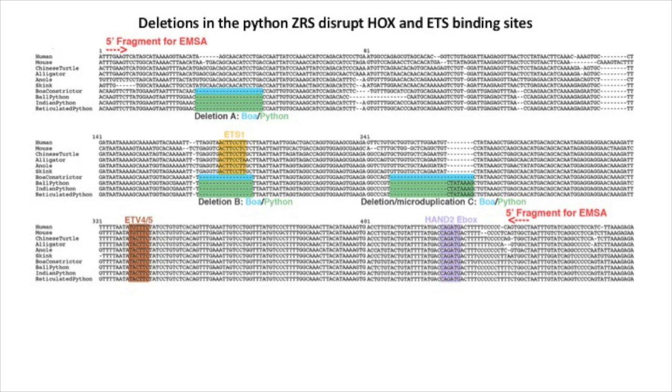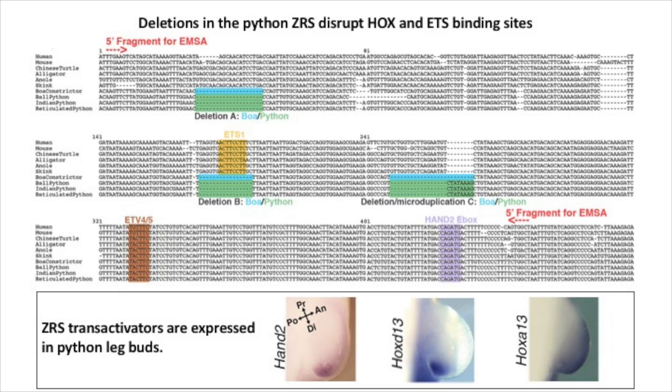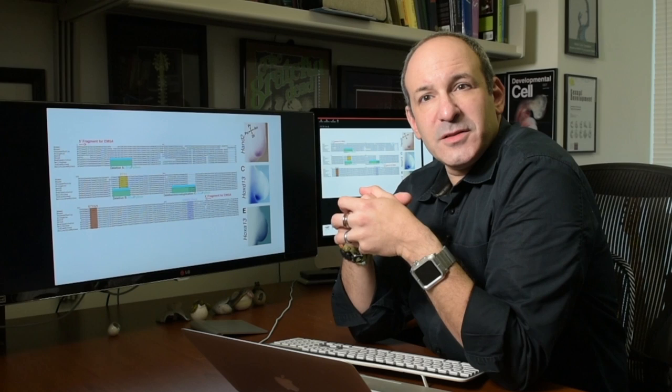Francisca drilled down to look at the sequence of the ZRS in pythons, and she identified some deletions that occur in regions that we hypothesized might be binding sites for important transcription factors, like HOXD13 and HAND2. We had already looked at those transcription factors and found that they were present in fairly normal, typical patterns for a limbed vertebrate. So the activators were present, but there were deletions that occurred in regions that might be necessary for those transcription factors to bind.